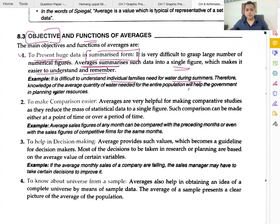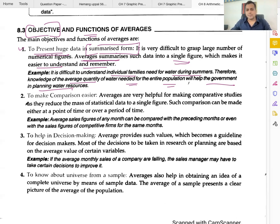Therefore, knowledge of the average quantity of water needed for the entire population will help the government in planning water resources. Based on the average calculation, we can provide resources. So, function one is to present huge data in a summarized form.